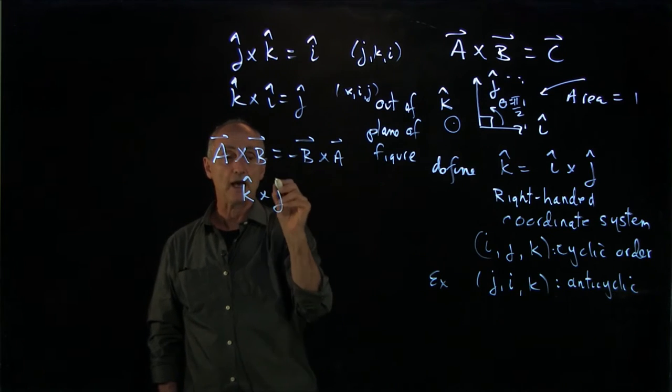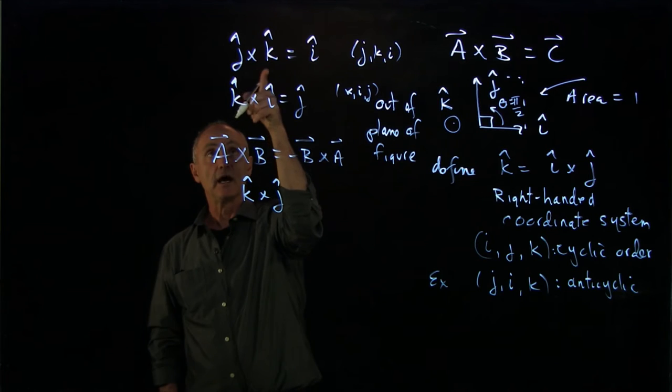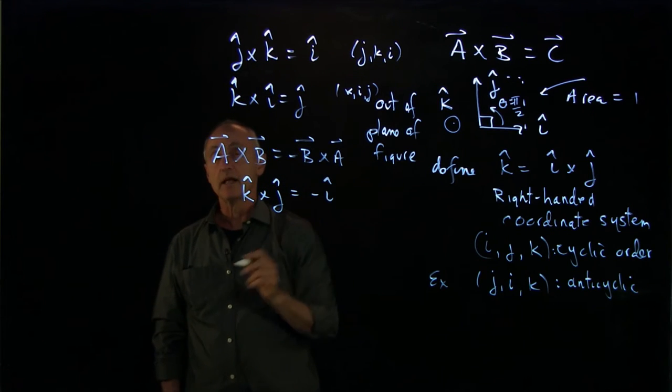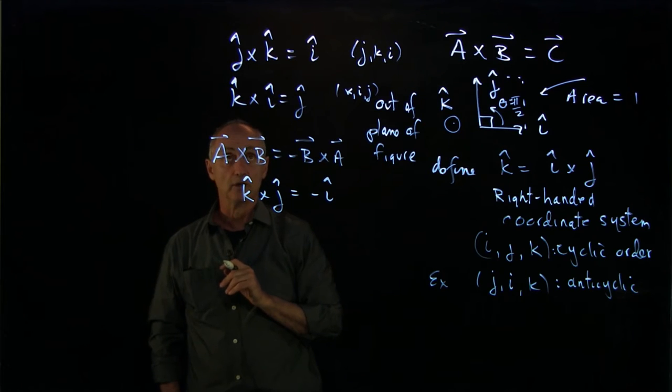k hat cross j hat has to be, notice what's called is minus i hat. That's anti-commutative property of the cross product.